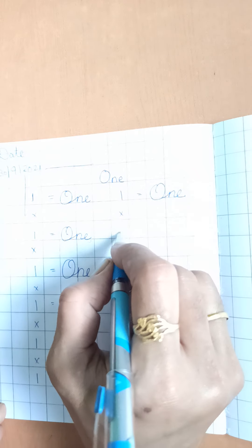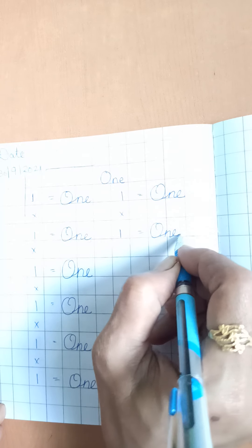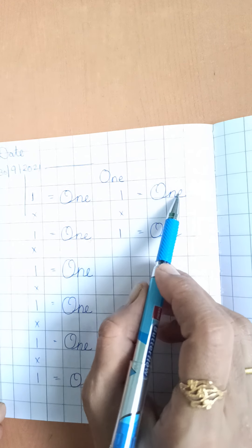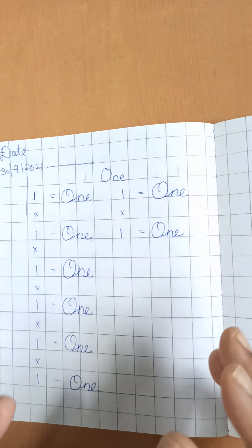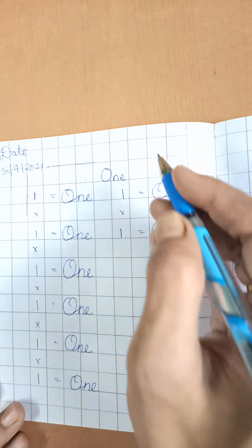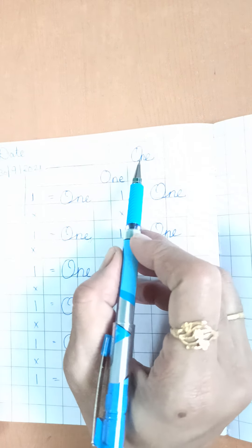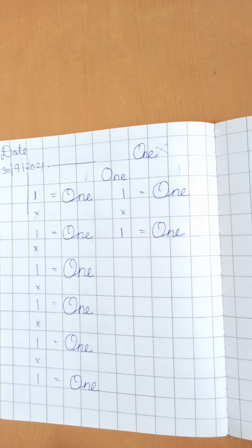Blue box. 1 is equal to O, N, E, 1. Yeh ek dusre ko chipak ke nahi likhna hai. Aapko yaha bhi gap maintain karna hai. Itna gandha aap nahi likh ho gaye. Yeh sab nahi chalega. This is wrong.